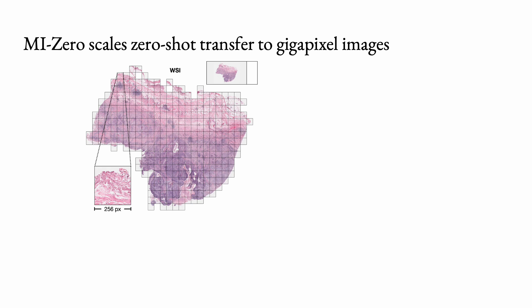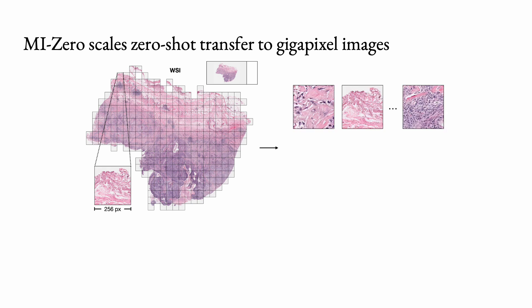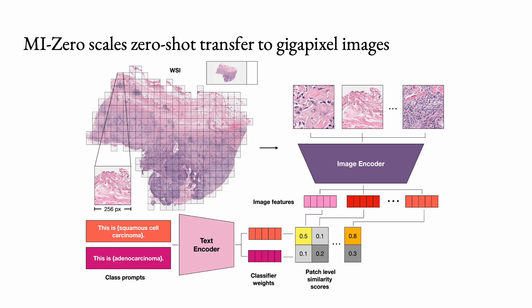In light of these challenges, we propose MI0, a zero-shot transfer framework for classifying WSIs inspired by the success of multiple-instance learning for solving weakly supervised learning tasks in computational pathology. In this approach, we first divide each WSI into smaller tiles called instances that are more amenable to processing via our image encoder, and we consider the WSI as a collection of such instances. For each instance, we independently compute patch-level cosine similarity scores with each text prompt in the aligned latent space. We then aggregate the instance-level similarity scores into slide-level similarity scores using a permutation-invariant operator similar to multiple-instance learning, such as mean or top-k pooling.